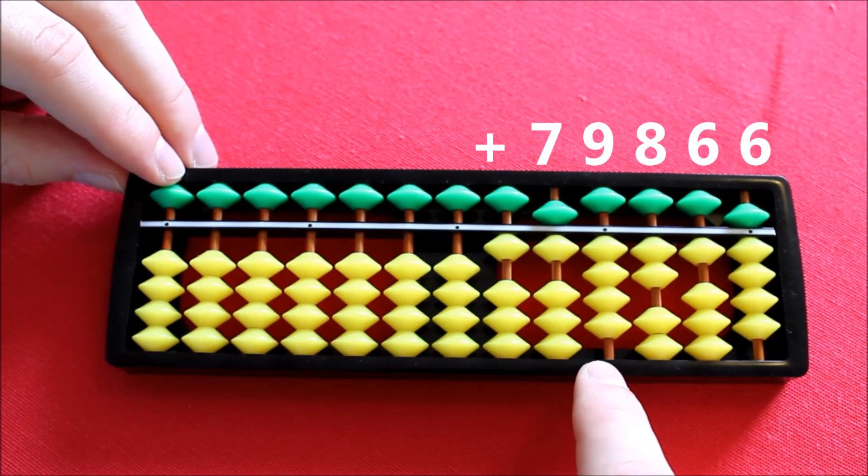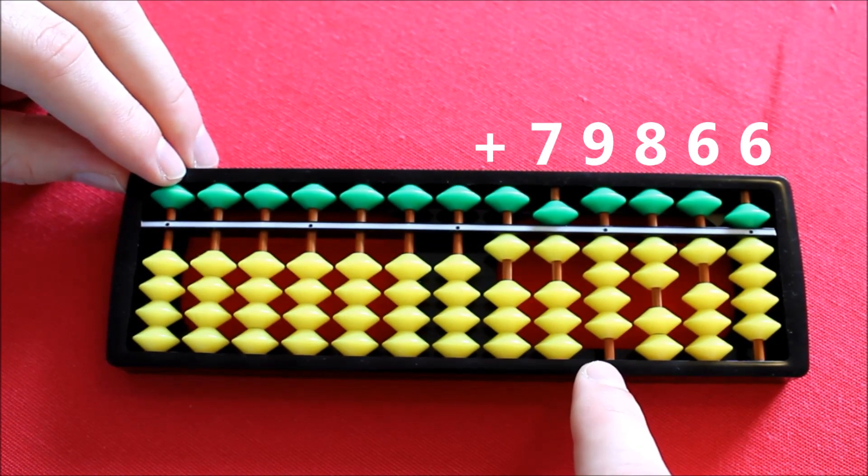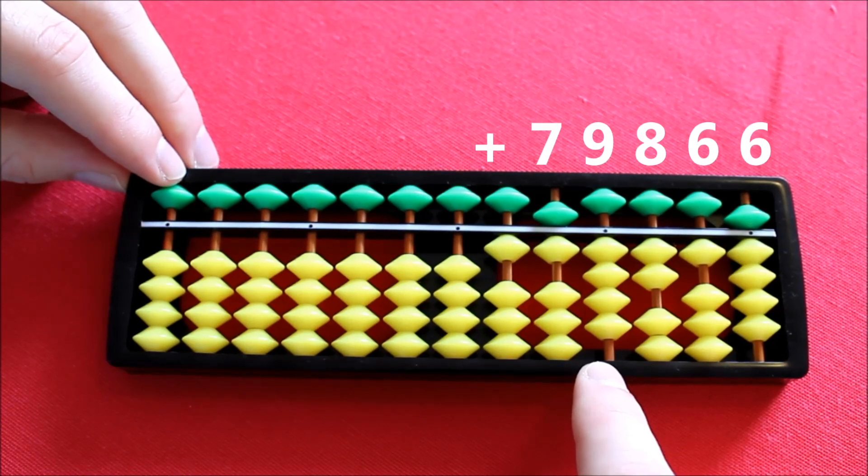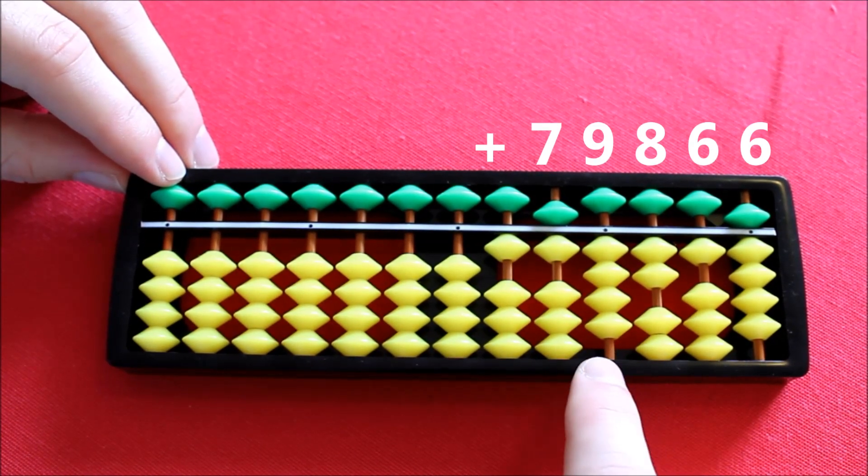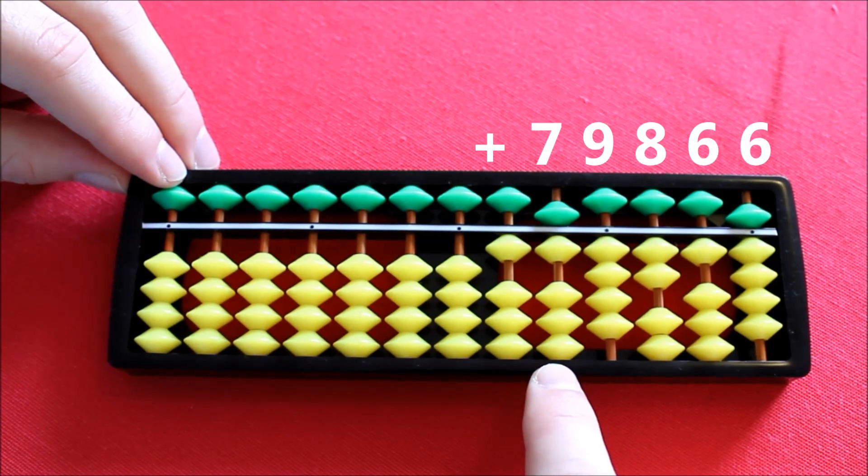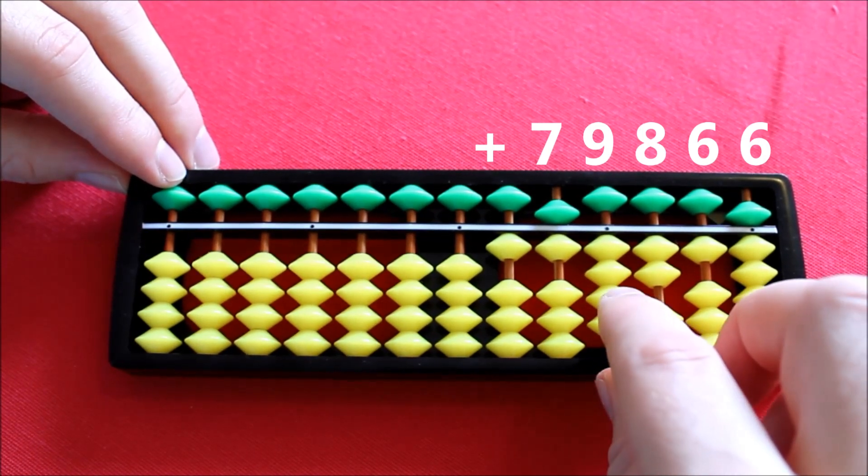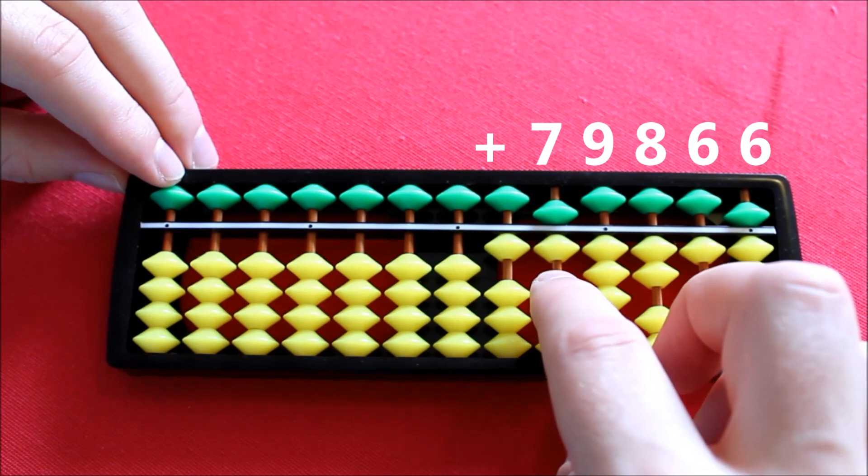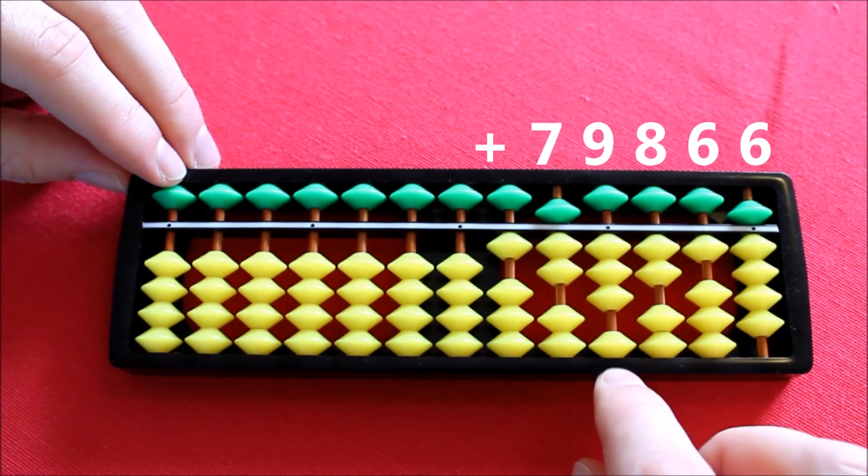Moving along to this column, we wish to add by 9. Again, we don't have enough beads available. So we're going to have to move into this column. But I only wish to add 9, not 10. So firstly, I subtract 1 so that when I then add my 10, we'll have added by 9.